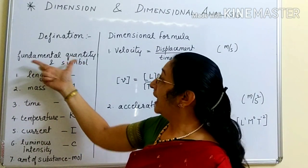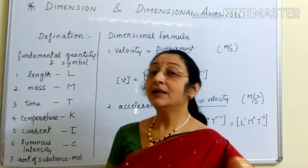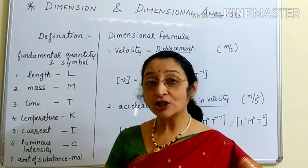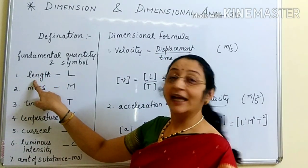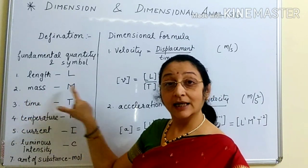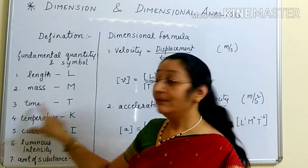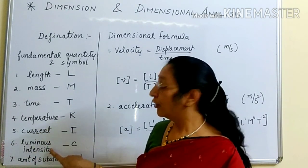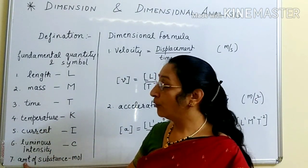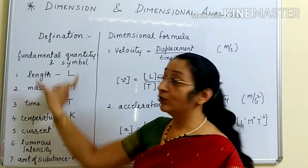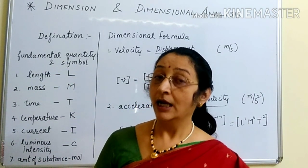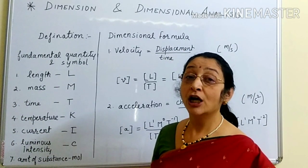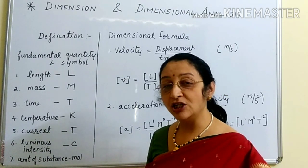Now we are going to use the symbols for the fundamental quantities which are used as dimensions. For length, capital L is the symbol; for mass, capital M; for time, capital T; for temperature, K; for current, I; for luminous intensity, C; and for the amount of substance, mol. So we know that these seven fundamental quantities have these symbols which should be used for writing the dimensions.